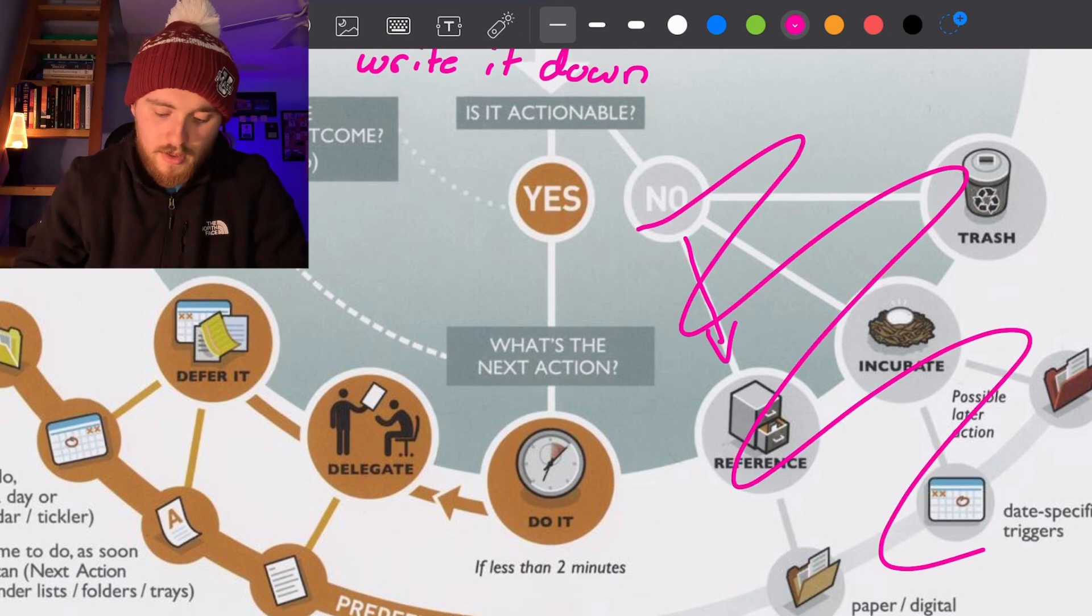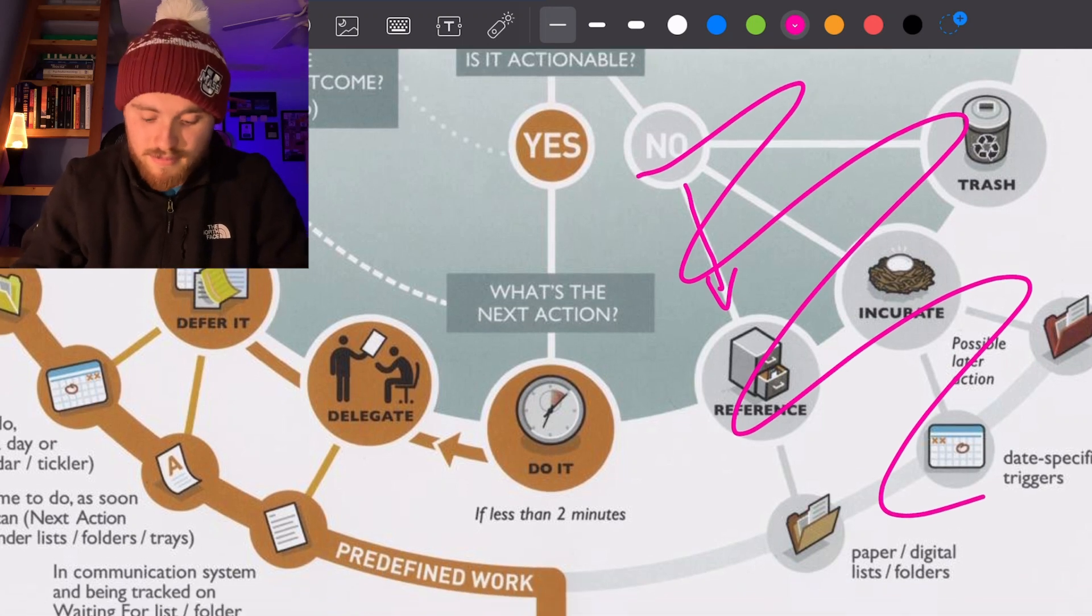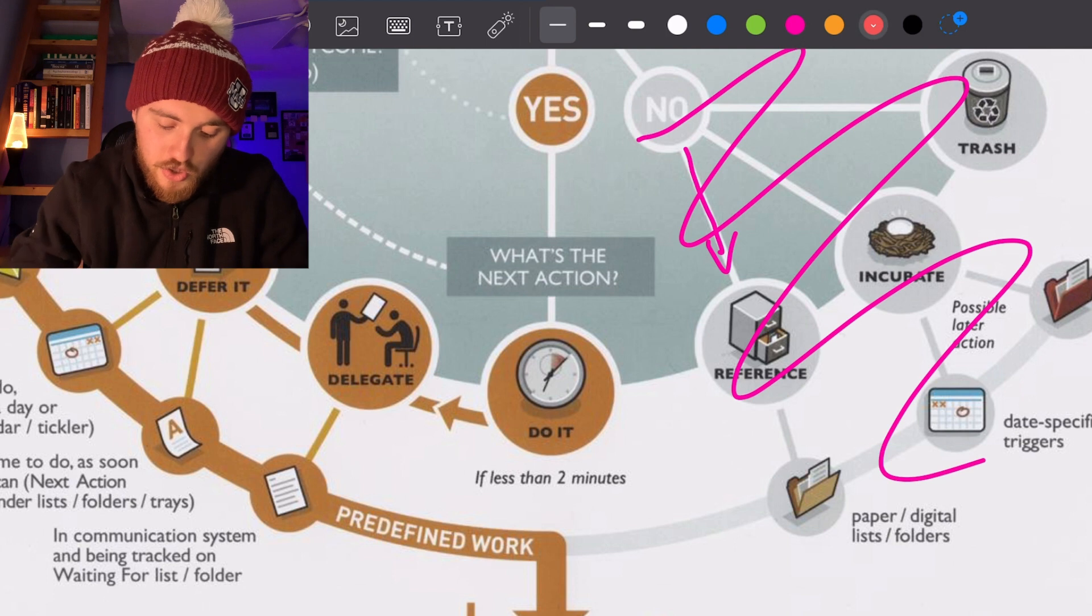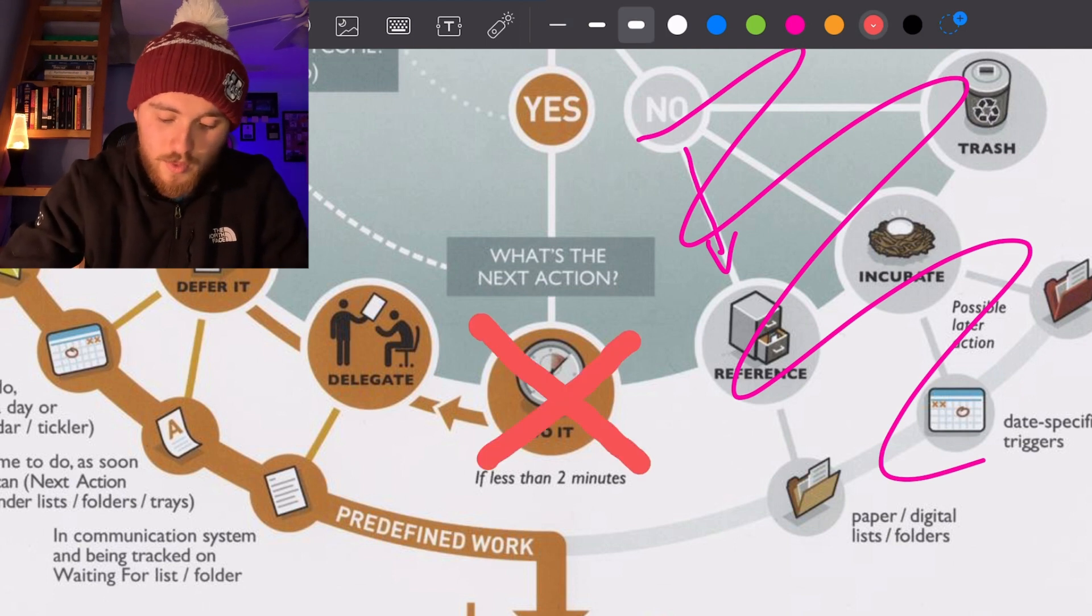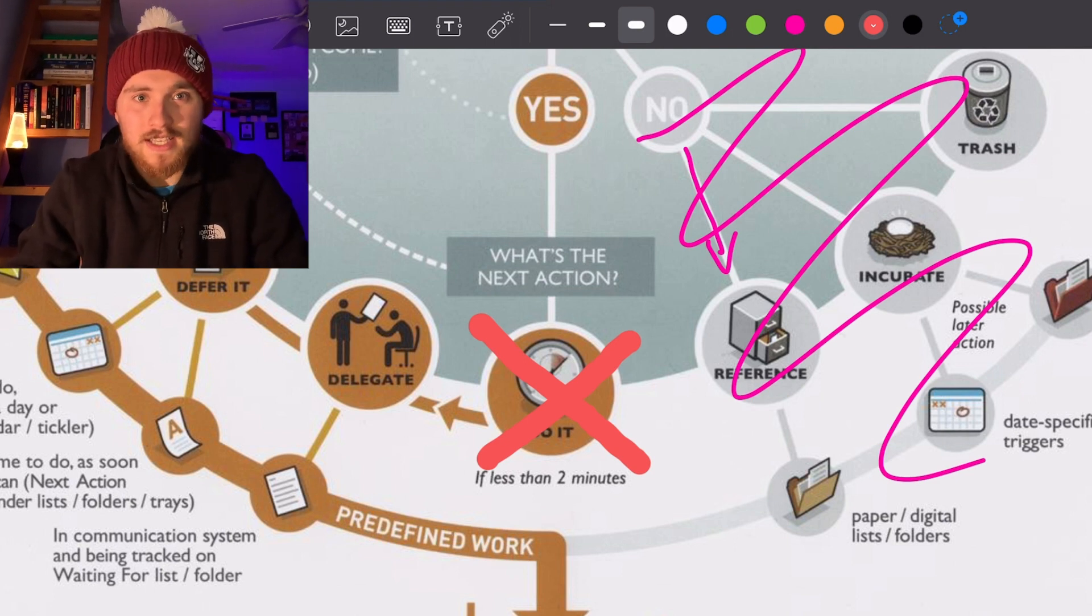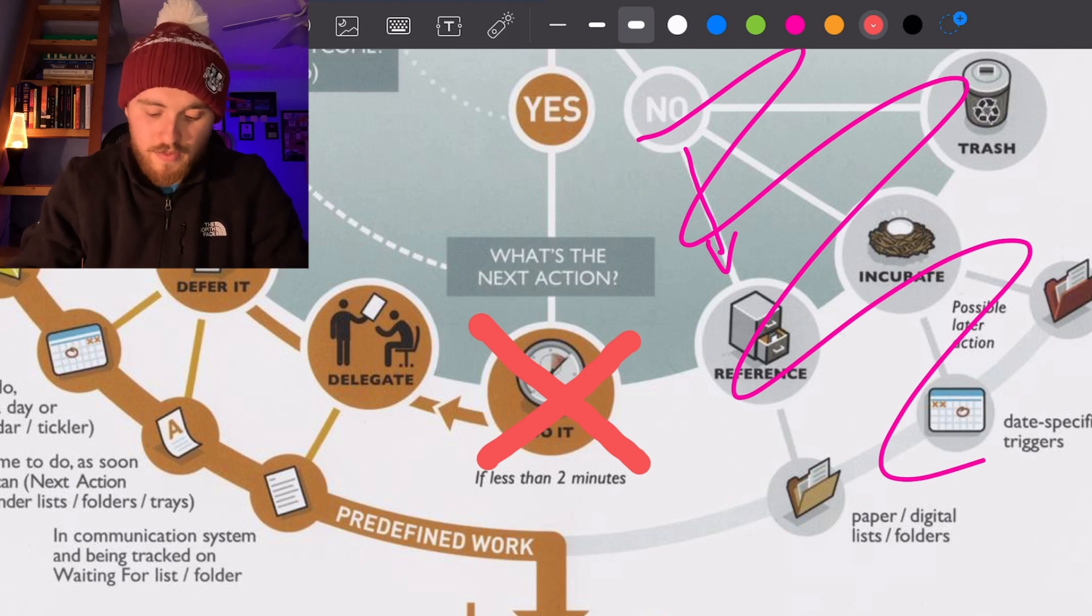So instead, we're going to cross this whole section out and we're going to come back to it later. And this two-minute thing, that is a huge no. If it takes less than two minutes, do not do it right away. Put it on the list and then maybe set an hour once a week to do all your two-minute tasks.